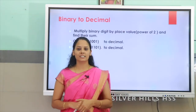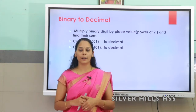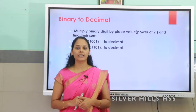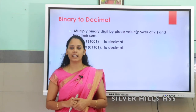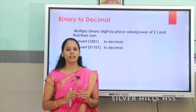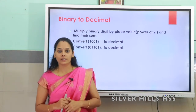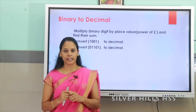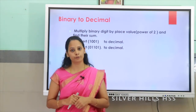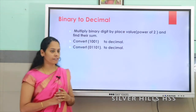First we are going to discuss how to convert binary number to decimal. The base of binary number is 2 and the base of decimal number is 10. To convert a binary number to decimal we are using multiplication by using the powers of 2. I will explain that with an example.